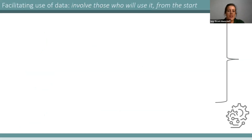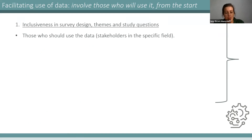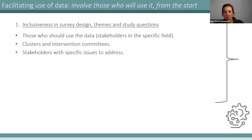To facilitate use of data, when conducting research we need to ensure others are involved in the design. Those who should use the data — stakeholders in a specific field, response actors, clusters or intervention committees depending on the public health emergency — need to be involved. We work a lot on relationship building, making sure we have close contacts with people in different organizations who will be transparent about their research and data needs.